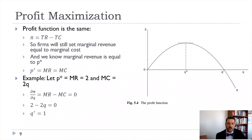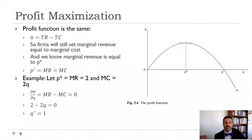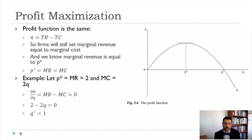Profit — which we call pi here; in microeconomics pi means profit, though in macroeconomics it's sometimes used for inflation — is just equal to total revenue minus total cost. To maximize profit, we choose quantity such that marginal revenue equals marginal cost. Marginal revenue is how much revenue goes up from producing one unit; marginal cost is how much cost goes up. If marginal revenue is higher than marginal cost, producing that extra unit increases profit, so you should keep producing until the two are equal.